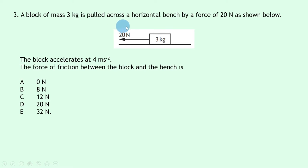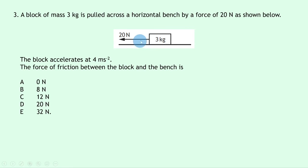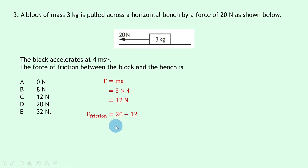Question 3: a 3 kg block is pulled across a horizontal bench by a force of 20 newtons and accelerates at 4 m/s². To find friction, first find the unbalanced force using F = ma: 3 × 4 = 12 newtons. The friction force is the forward force minus the unbalanced force: 20 − 12 = 8 newtons. The answer is B.